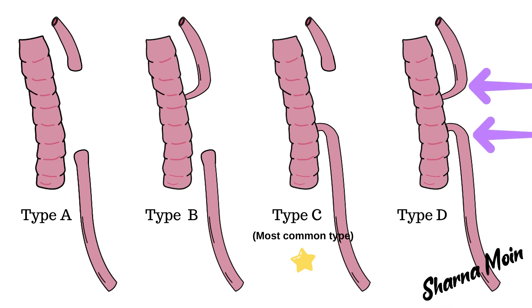Type D is the rarest but most severe type. In this type, both the upper and lower parts of the esophagus make abnormal connections with the trachea in two separate, isolated places. These are the abnormalities seen in esophageal atresia.